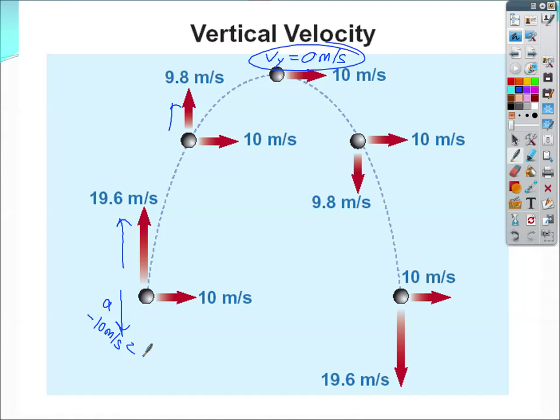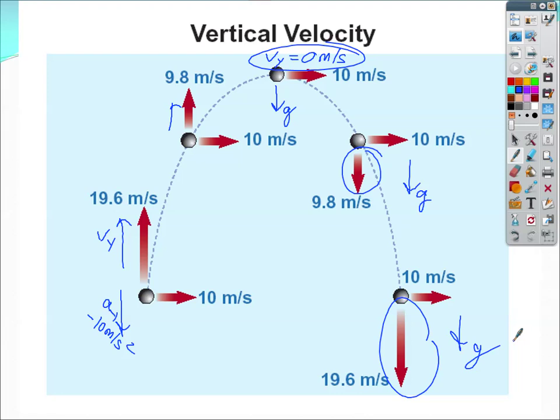The vertical velocity decreases as you go up because the acceleration — gravity — is downward at negative 10 m/s², actually 9.8 m/s². It decreases by 9.8 every second. The vertical velocity and the acceleration are in opposite directions going up, so the object slows down. On the other side, the vertical velocity gets larger because acceleration and velocity now point in the same direction. Even at the very top, the acceleration is still g — 10 m/s². The acceleration the entire time, just like horizontal velocity, is constant, always pointing down.